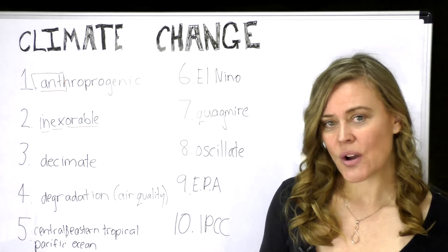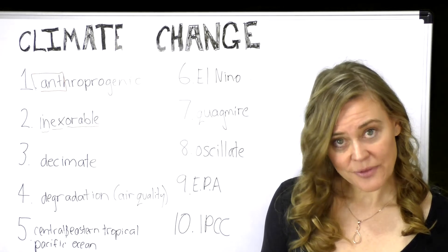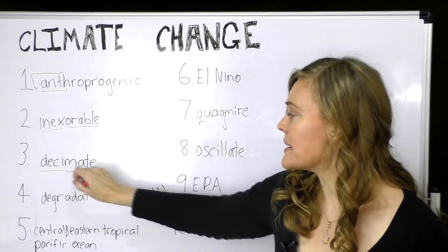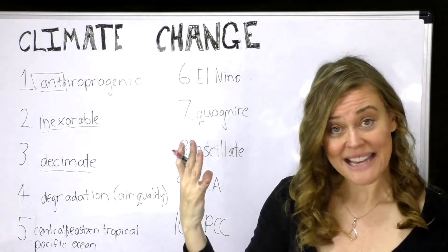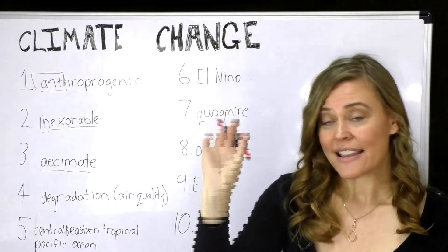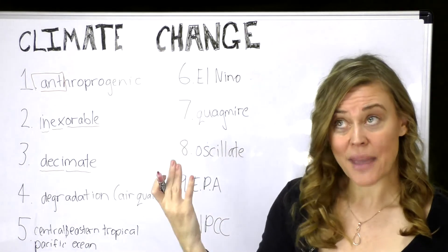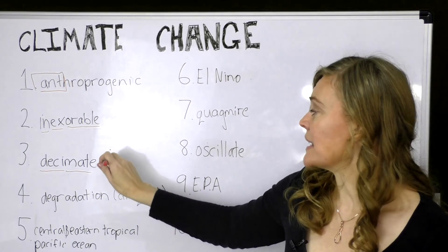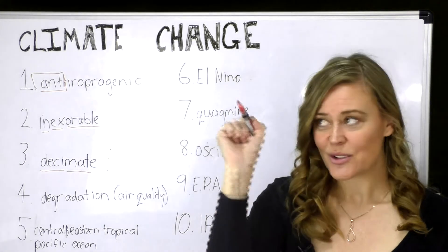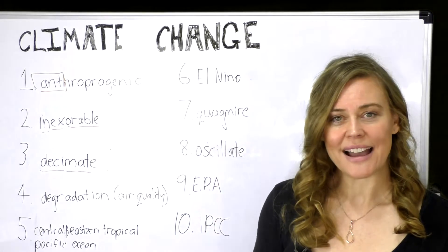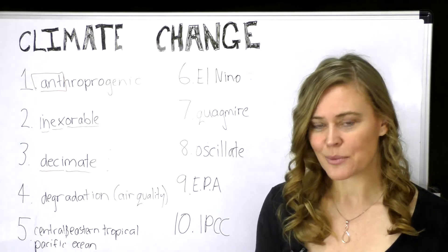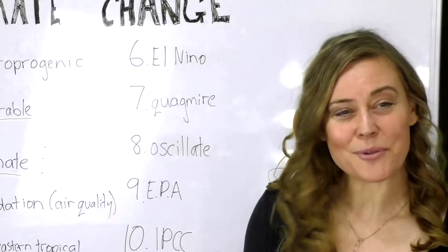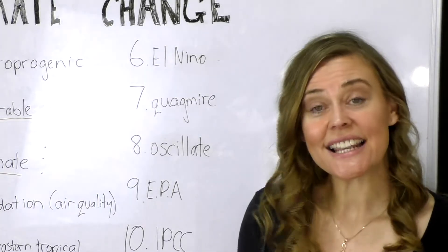Number three: 'decimate.' The keyword for number three was 'traffic lights.' Think of 'decimal' — maybe you imagine the face of your mates on the traffic lights, reminding you of your friends. The three small decimal points remind you that when you think of three, you think of traffic lights, decimals, and 'decimate,' which means to kill or destroy.